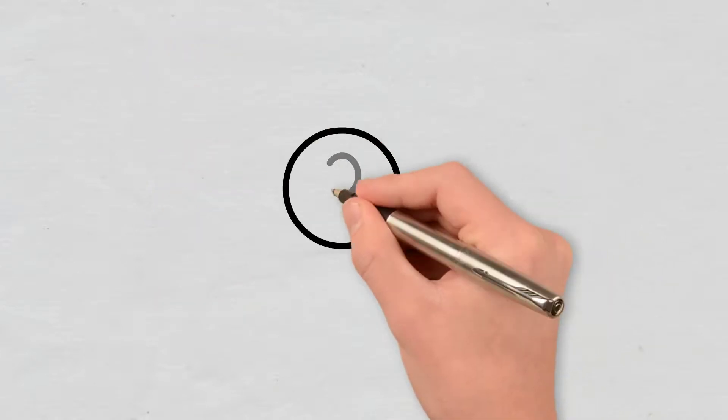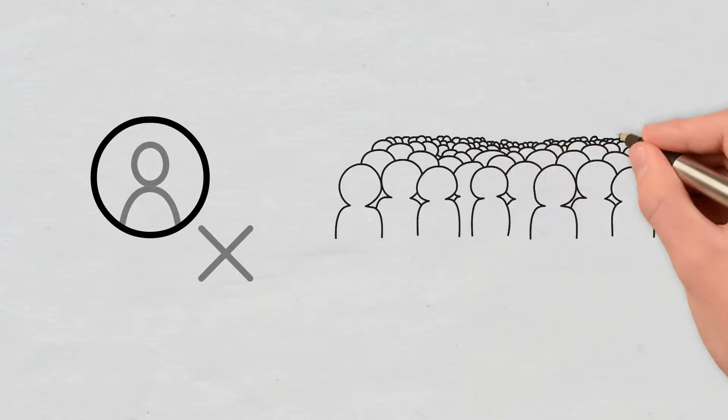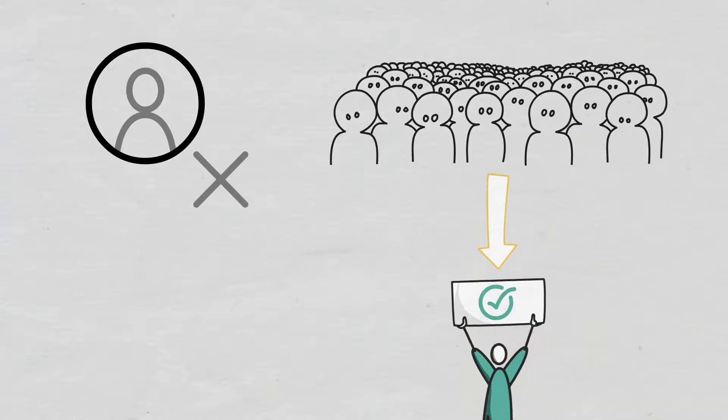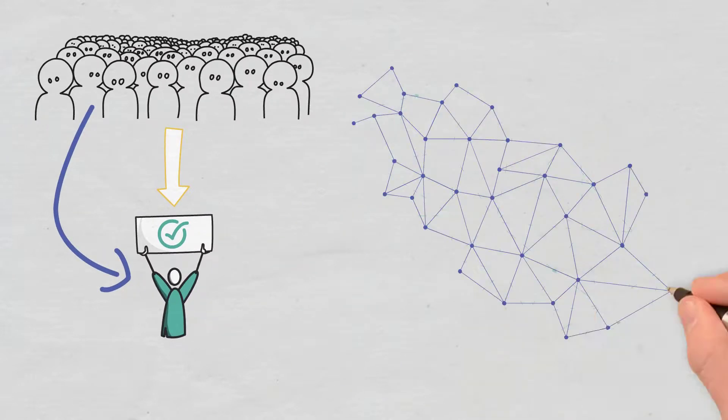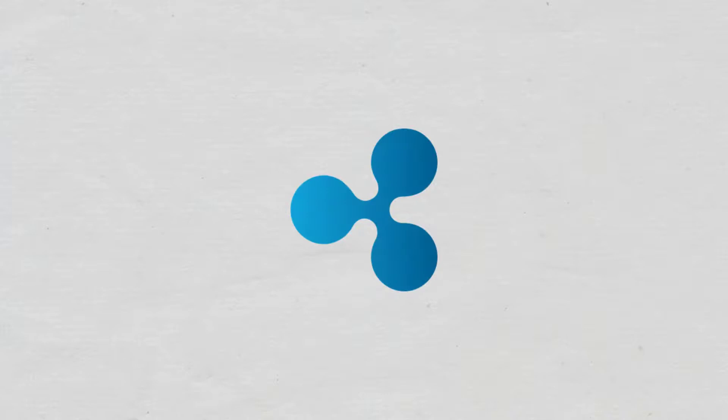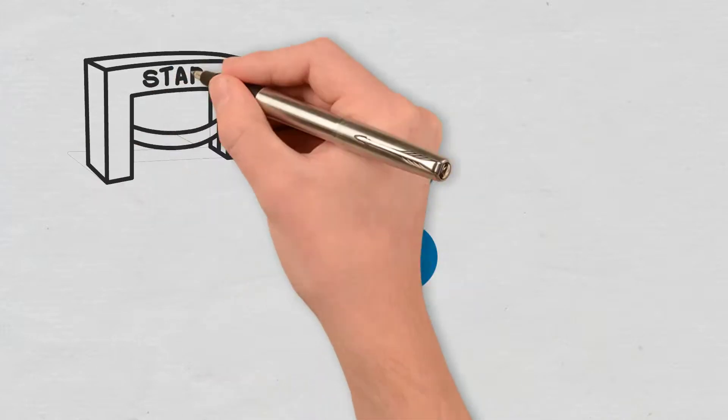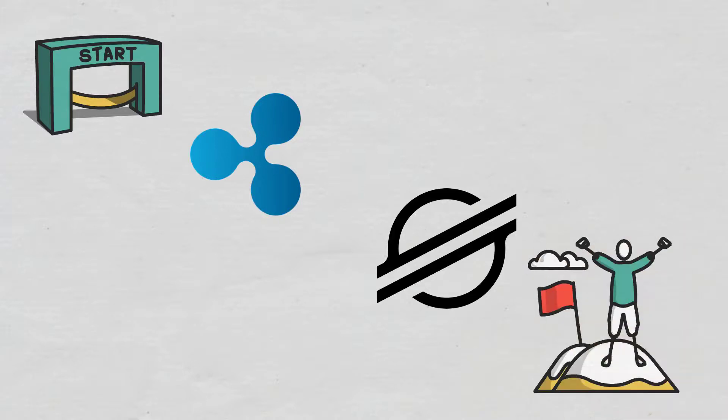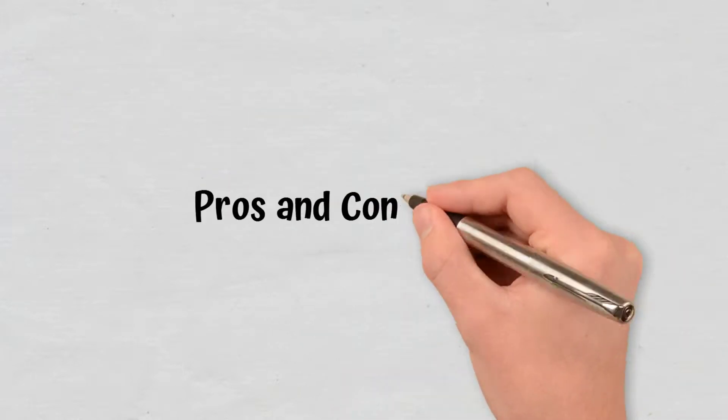Without a central authority to decide on the recommended validator list, FBA creates an open membership network. This means anyone can run a validator and participate in the network's consensus, as long as any other participating validator adds them to their quorum slice. This further allows for decentralization, as more and more nodes can be added to the network, promoting organic network growth. The Ripple blockchain pioneered the FBA consensus mechanism, but the Stellar blockchain refined it and successfully implemented the first safe and secure FBA.